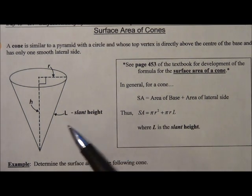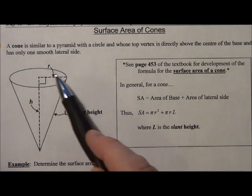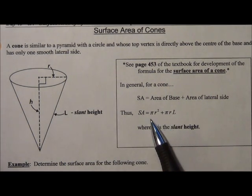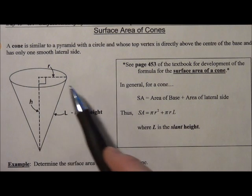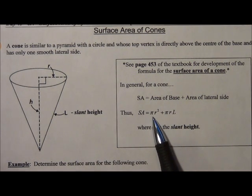From there, you could substitute that value into l, multiply by the radius, multiply by pi, and then add that to the area of the base, which is calculated by pi r squared.